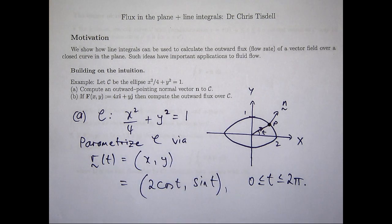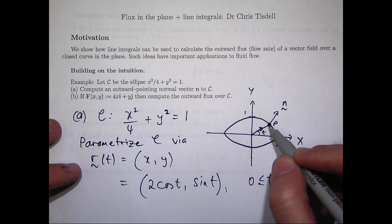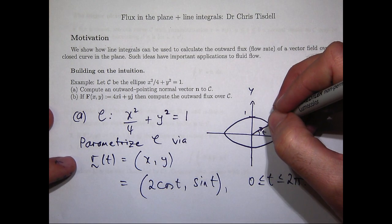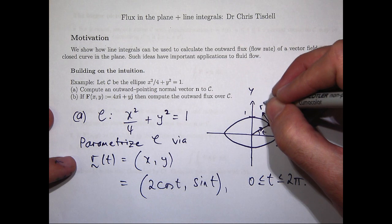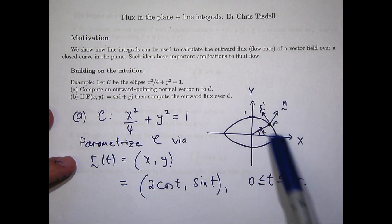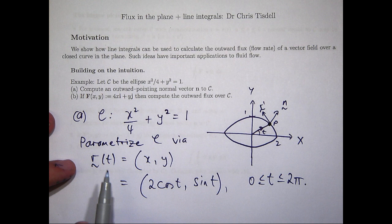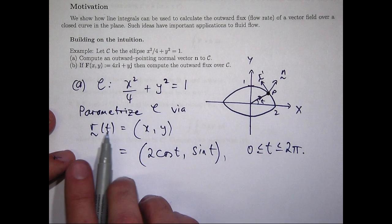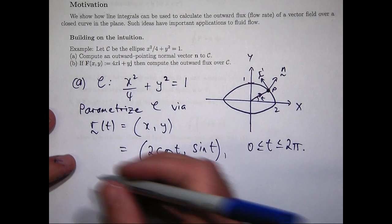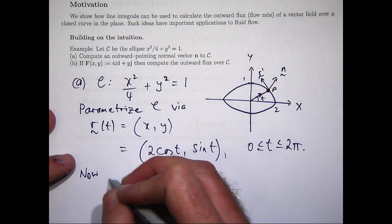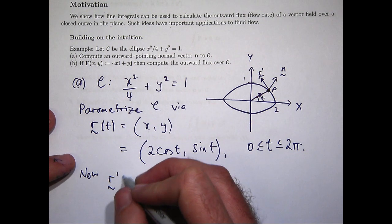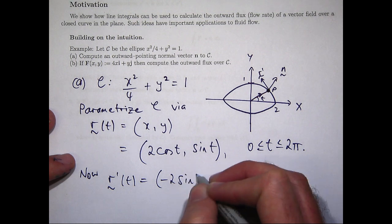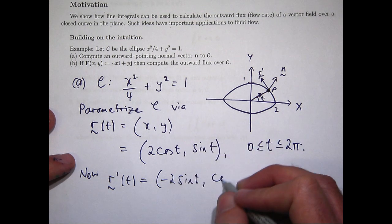Okay, so what can I do with this? Well, think of this vector here as my position vector of p. What I can compute is this tangent vector to my curve. Okay, so to compute that all I do is I differentiate the component functions of my r of t. So if I differentiate 2 cosine t I will get minus 2 sine t. If I differentiate sine t I will get cosine t.